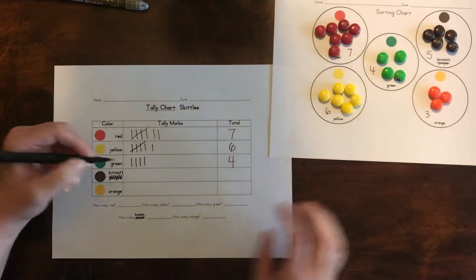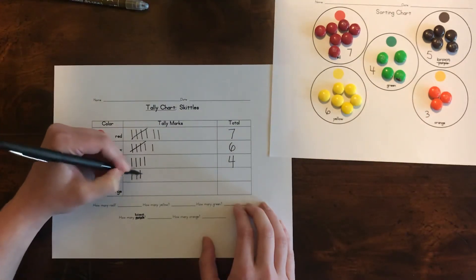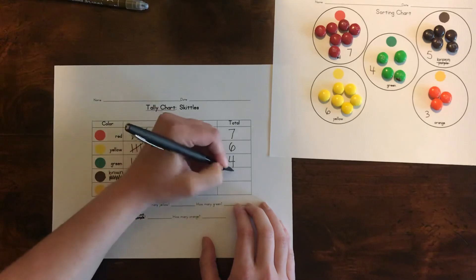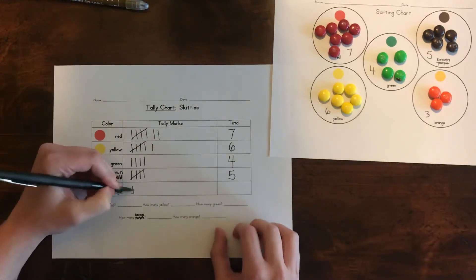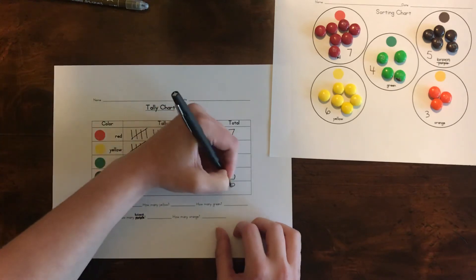Then brown. We had five. One, two, three, four, five. Last we had three orange. So one, two, three. And a three over here.